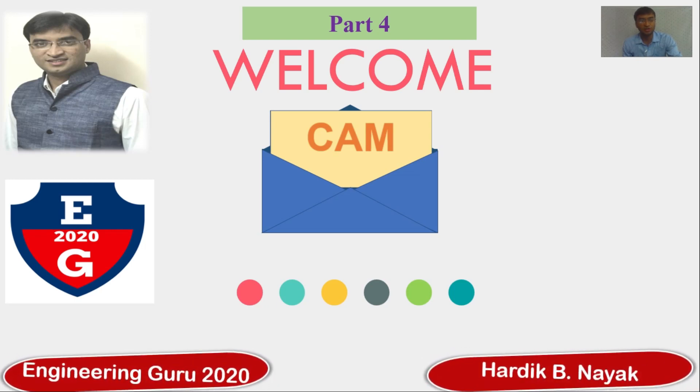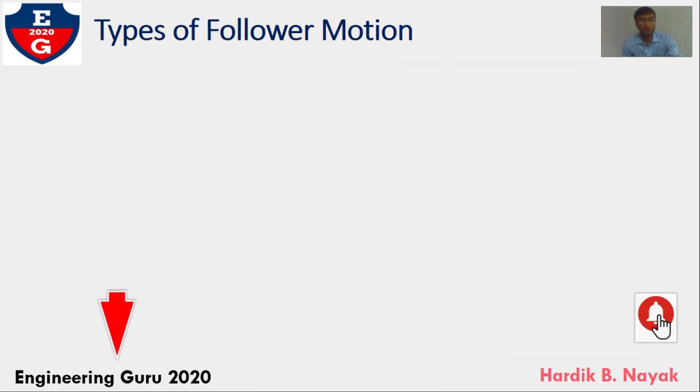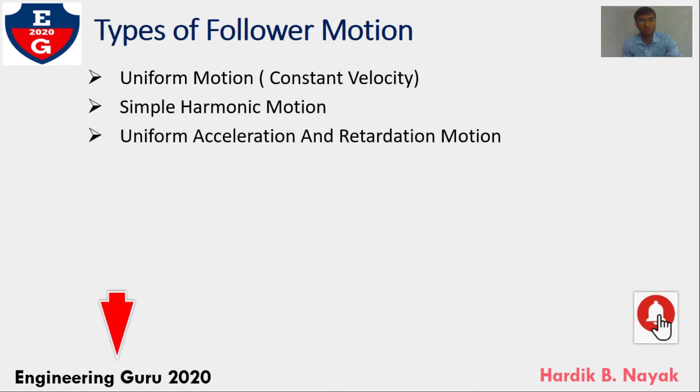In this video, we will learn basic technique of displacement diagram for cycloidal motion. This technique will be very useful whenever you draw the problem. A follower during his travel may have one of the following motions: First, Uniform Velocity. Second, Simple Harmonic Motion that is called SHM. Third, Uniform Acceleration and Retardation Motion. And final, Cycloidal Motion.